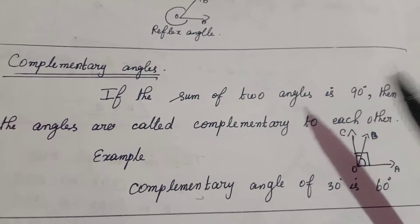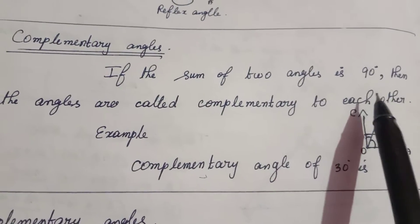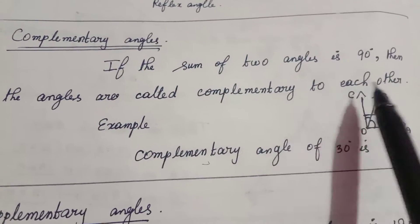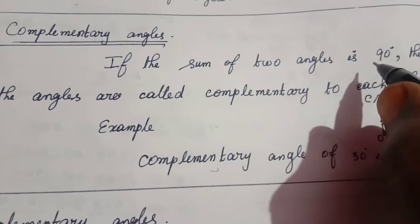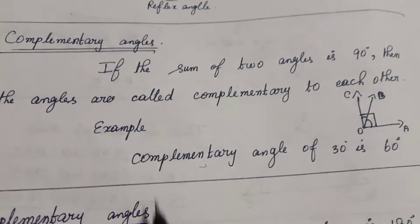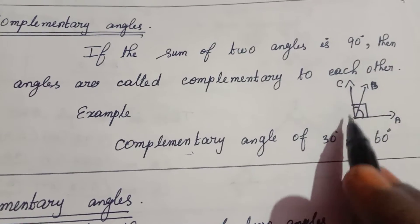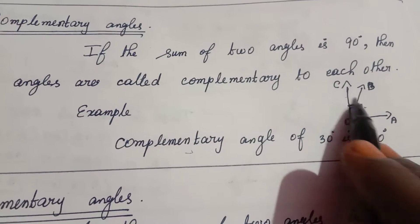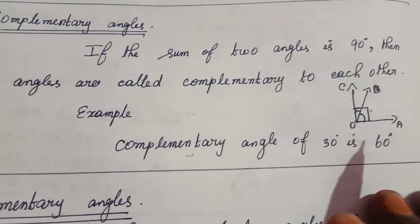Complementary angle. Listen carefully. If the sum of two angles is 90 degrees, then the angles are called complementary to each other. For example, the complementary angle of 30 degrees is 60 degrees. 90 degrees is divided into two parts — this one part and this one part — so the sum of these two angles is equal to 90 degrees. They are called complementary angles.